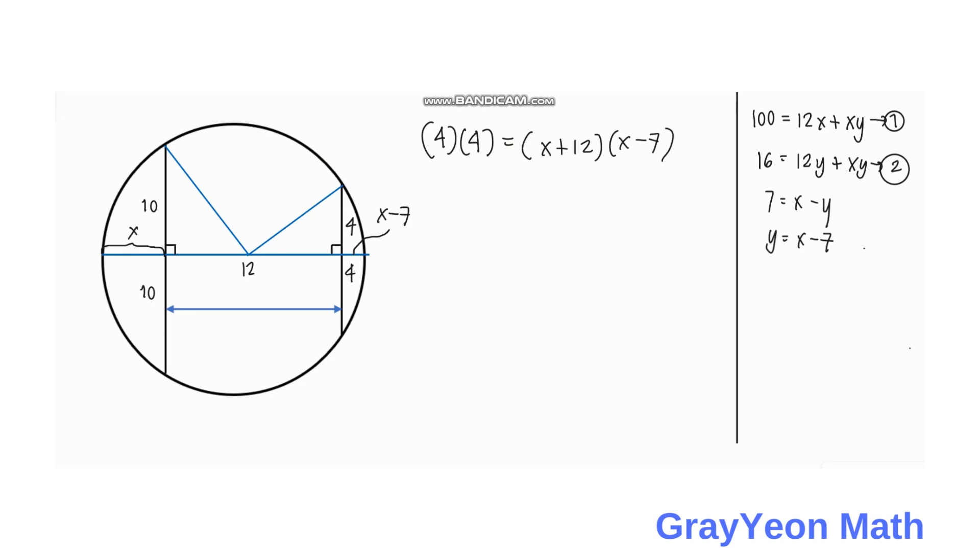If we simplify this we have 16 is equal to X squared plus 5X minus 84. If we put 16 onto the right side, it will become 0 is equal to X squared plus 5X minus 100. We solve this quadratic equation using the quadratic formula with a equals 1, b equals 5, and c equals negative 100.